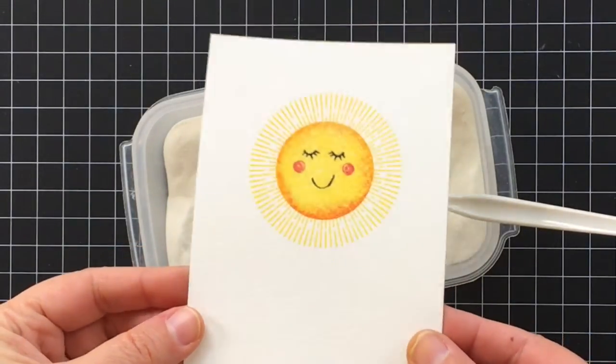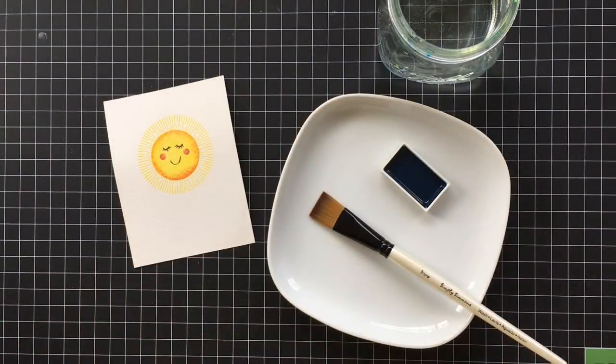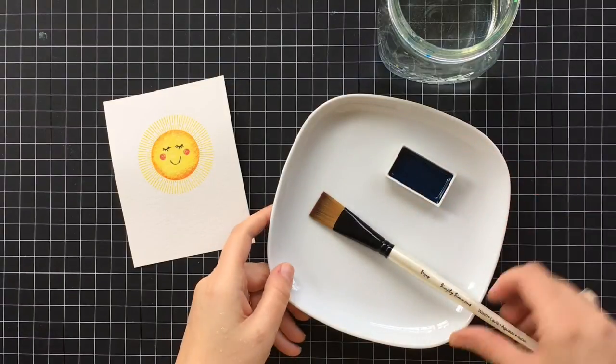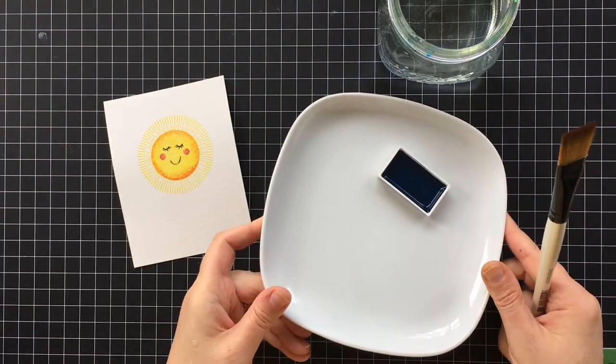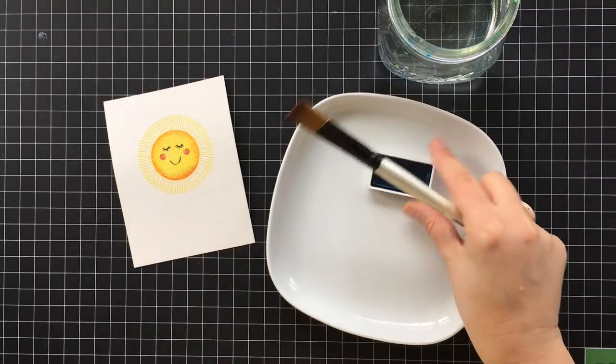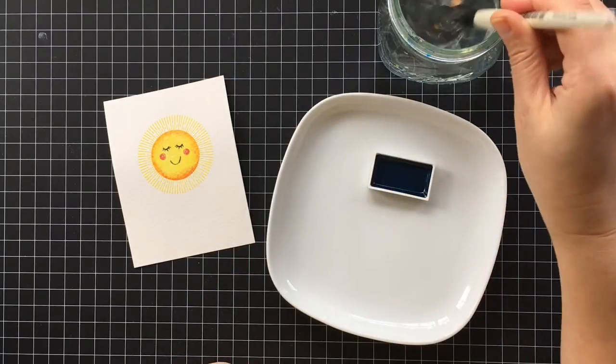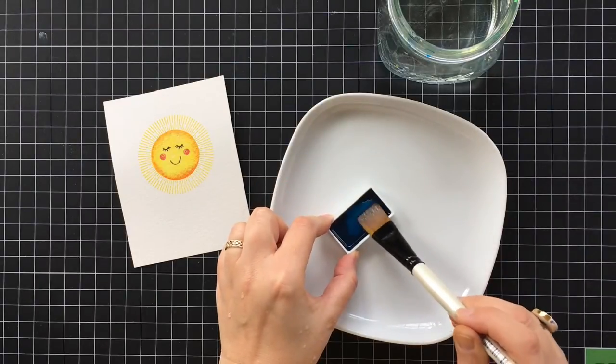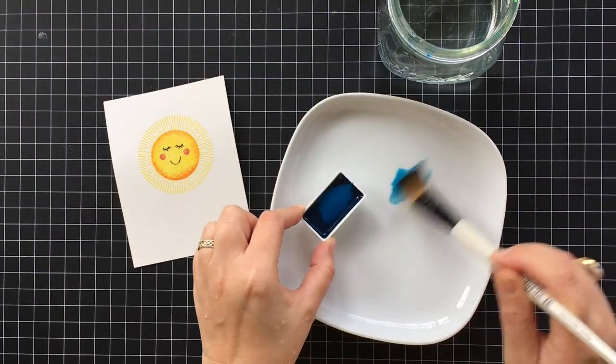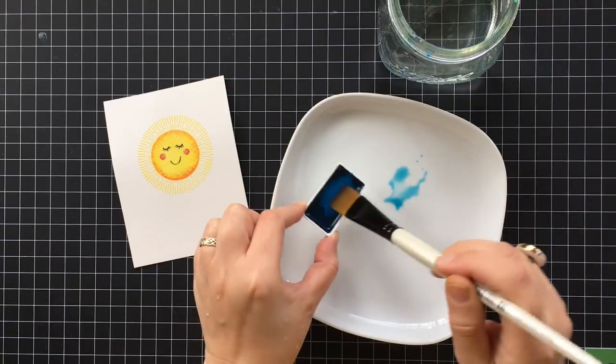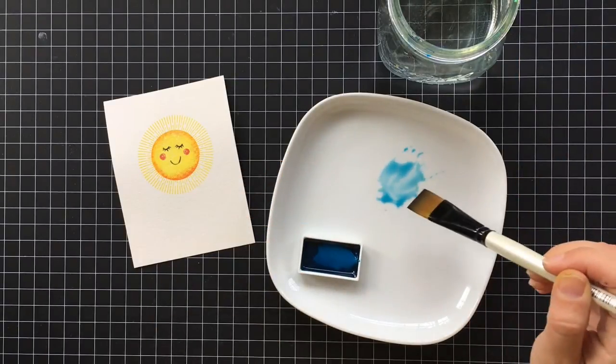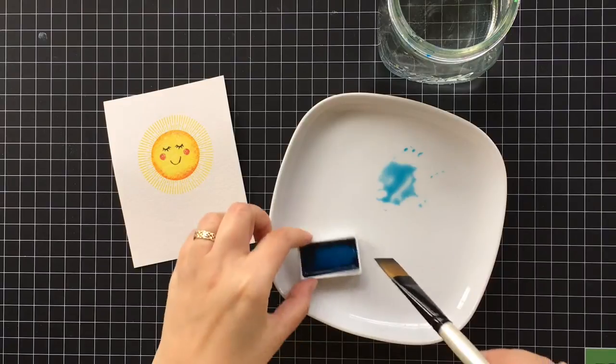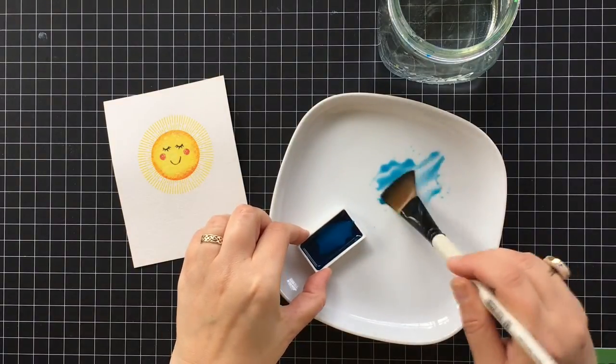Here it is after it's been heat set with the heat gun. You can see how shiny that is. Next I'm going to add a background wash with some watercolor. This is a blue from the Gansai Tambi set and I'm just working on a plate, this is just a plain porcelain plate that I picked up at Ikea.